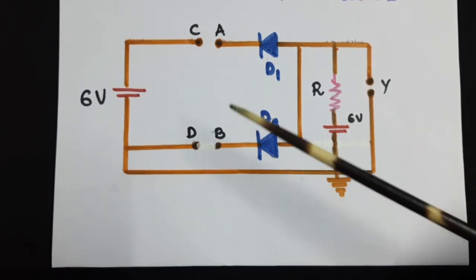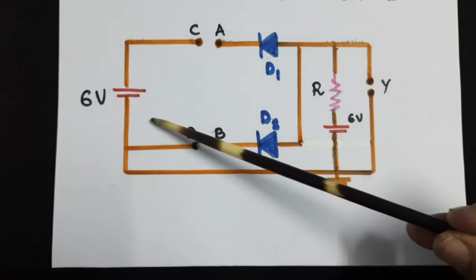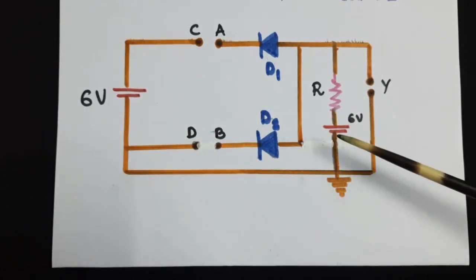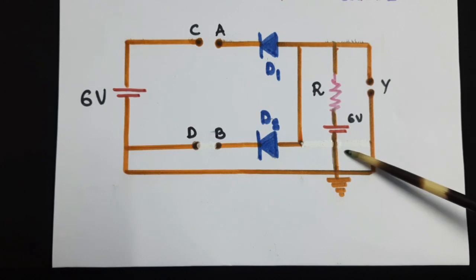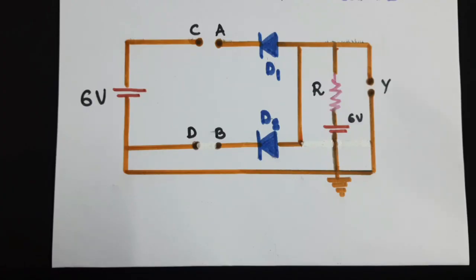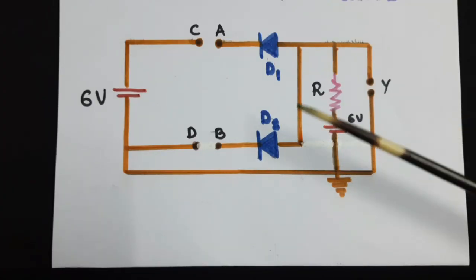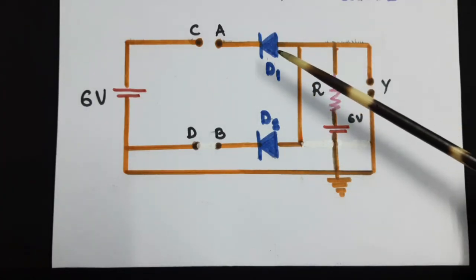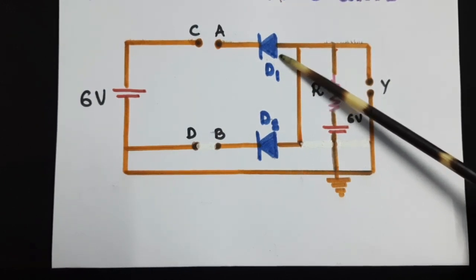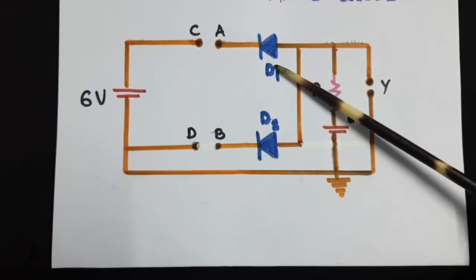Here there are two supply batteries, but in fact the purpose of both batteries can be achieved with one battery alone. Let's see how this circuit works. We know that a diode will conduct only when it is forward biased — it will not conduct when it is reverse biased.